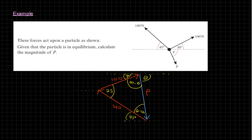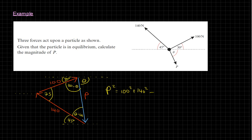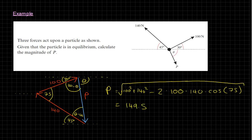Using cosine rule: P² = 100² + 140² − 2 × 100 × 140 × cos(75°). Taking the square root gives P ≈ 149.5 newtons. This makes sense because P should be slightly longer than the 140 N vector, which is consistent with the corrected diagram. You could also find θ using the sine rule as a bonus exercise.